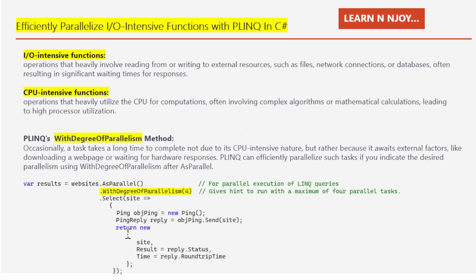Whatever the response we are going to receive, we are going to store into the reply variable of the PingReply type. Then there is a return statement that projects each website URL along with the ping result, that's reply.Status, and round trip time, that is reply.RoundtripTime. I'm just putting it in an anonymous type.